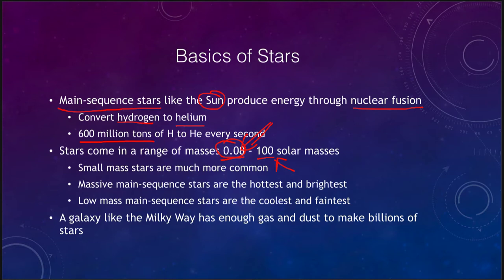However, these hundred solar mass stars are the hottest and the brightest, so they are the easiest to see. We can see them over great distances, whereas we can only see the very small, cool and faint stars if they are very close to us.